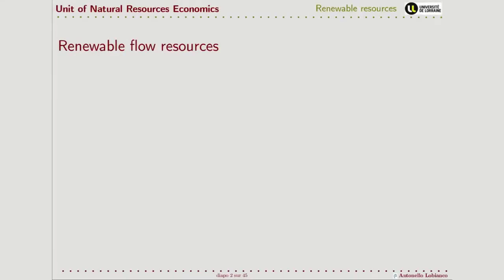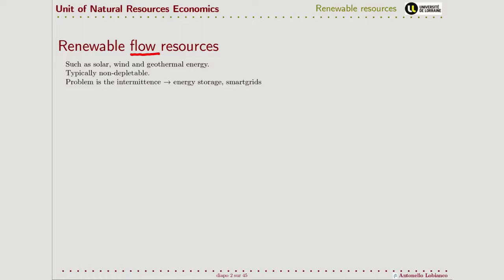Renewable energy can be divided into two big and very different categories. The first one is what we call renewable flow resources, such as solar, wind, or geothermal energy. Their characteristic is that whatever we use of these resources, they are typically not depletable. So we are not going to influence the capacity of these resources to regenerate themselves with our usage.